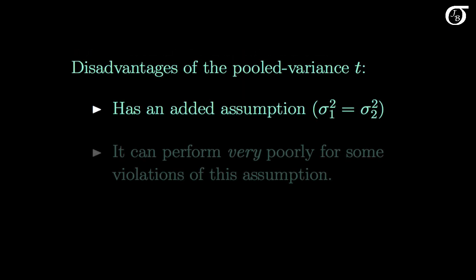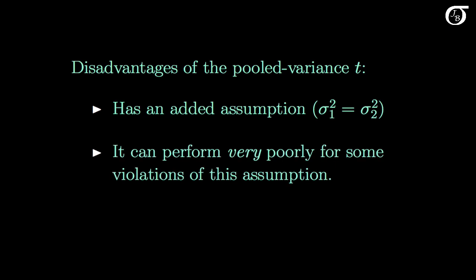Some disadvantages of the pooled variance t: it has the added assumption that the population variances are equal, and this assumption is unlikely to be perfectly true. It can also perform very poorly for some violations of this assumption, meaning we can get very misleading results if we use it in the wrong situations.